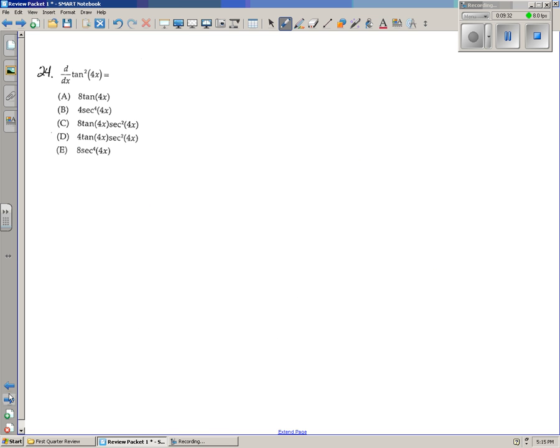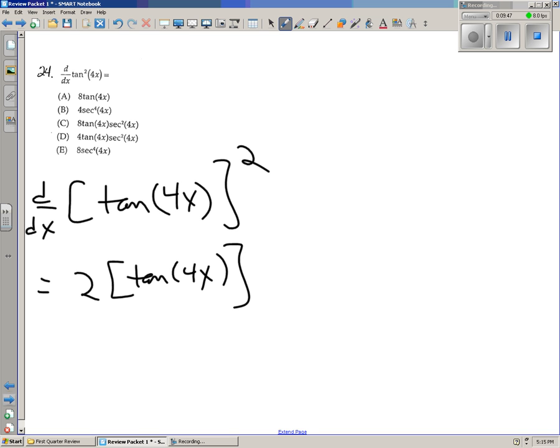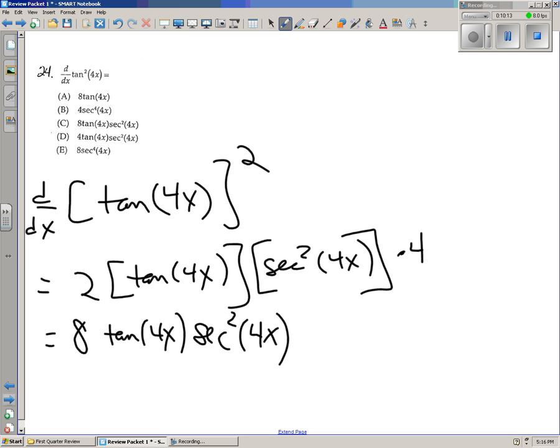Alright, number 24. We have the derivative of tan squared of 4x, so that's a bad way to write this. This is a much better way to write it, and it is a double chain rule problem. So we get 2 tan of 4x, that's the derivative of the outer with respect to the inner, times the derivative of tangent of stuff, which is secant squared of the stuff. And this is where everybody forgets, 4x is in this function, and that needs a derivative also of 4. So we end up getting 8 tan of 4x, secant squared of 4x, otherwise known as choice C.